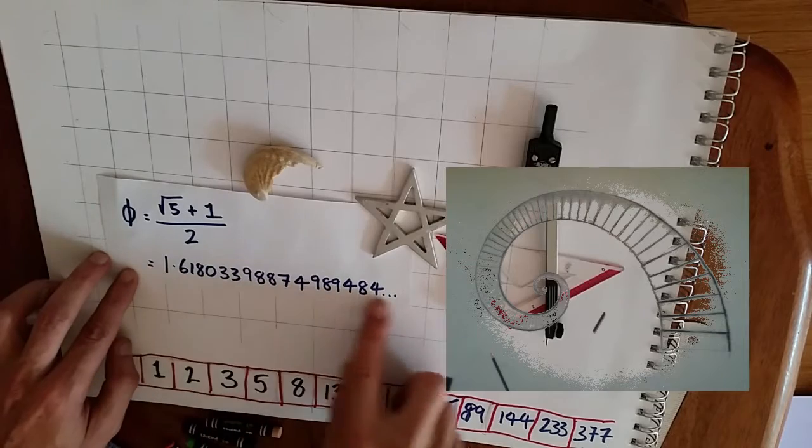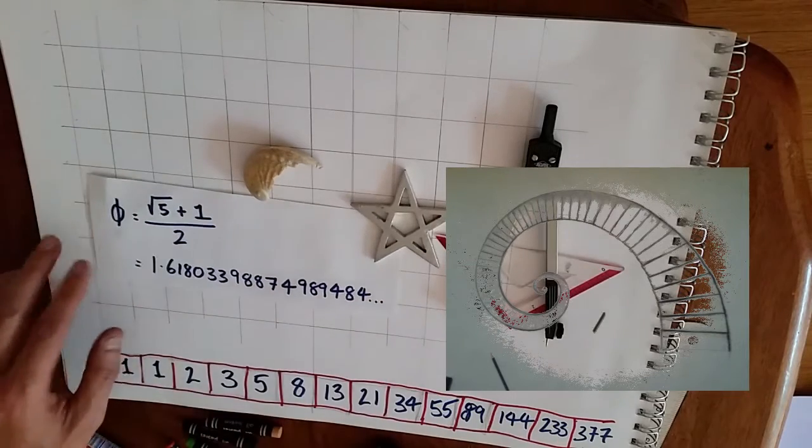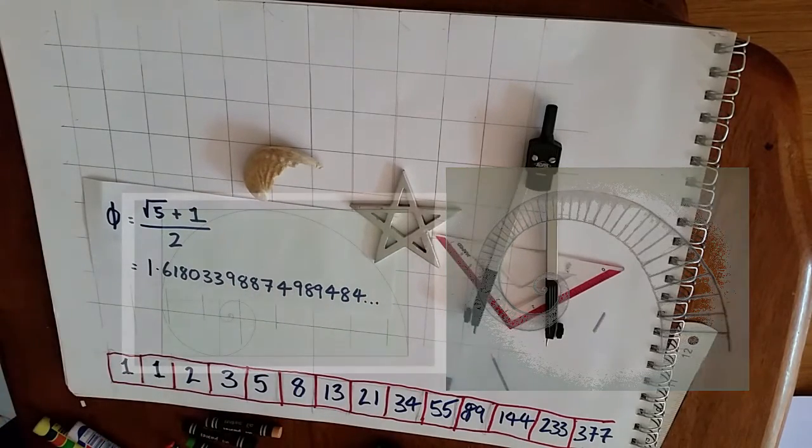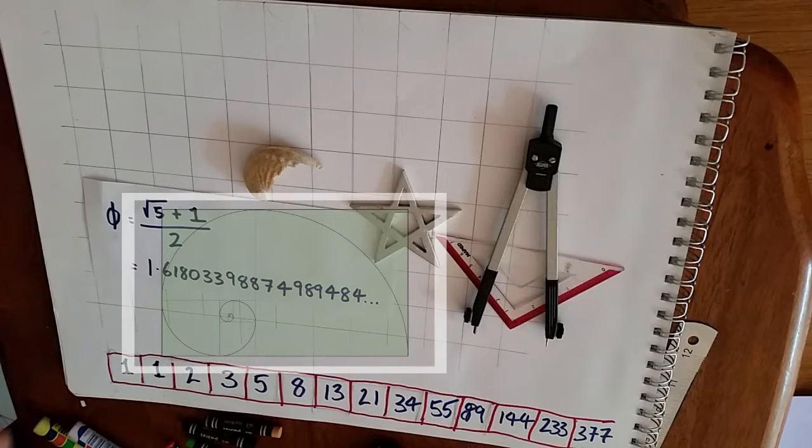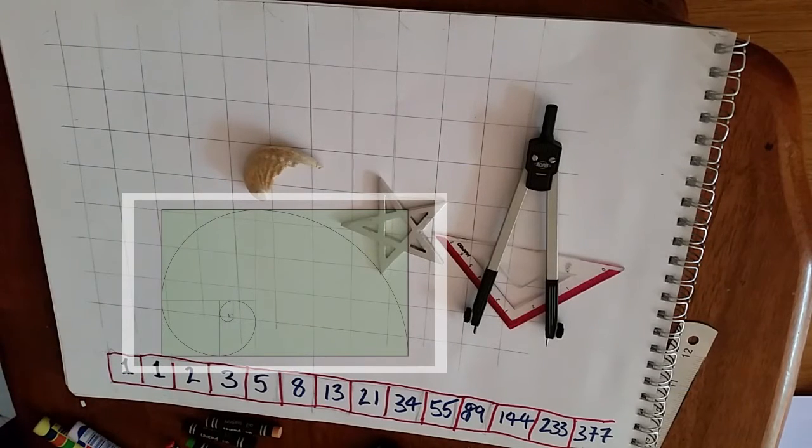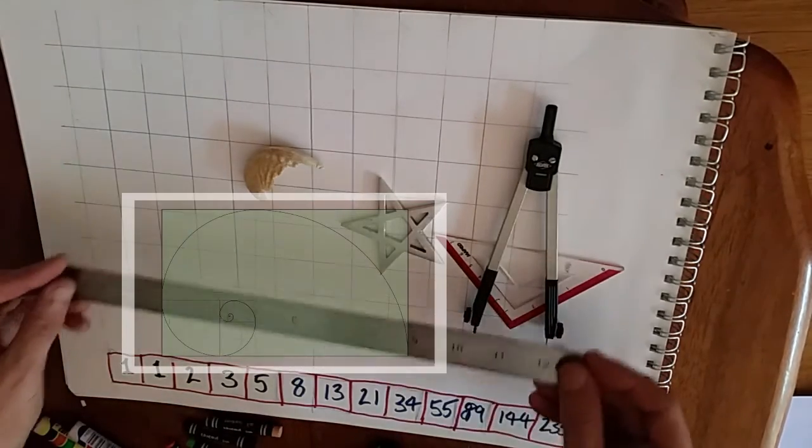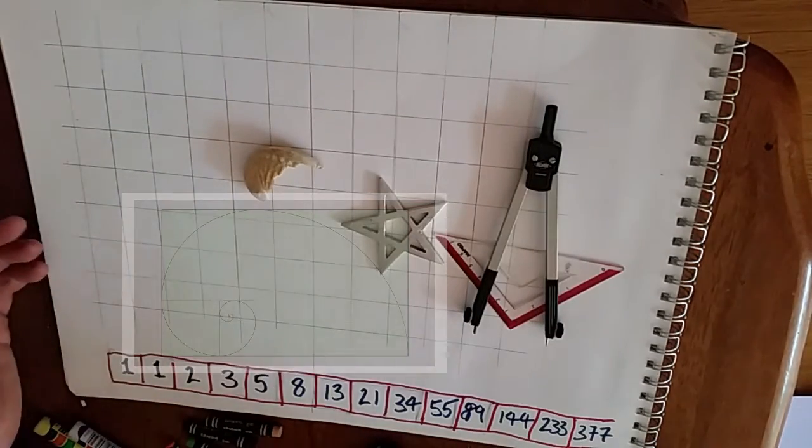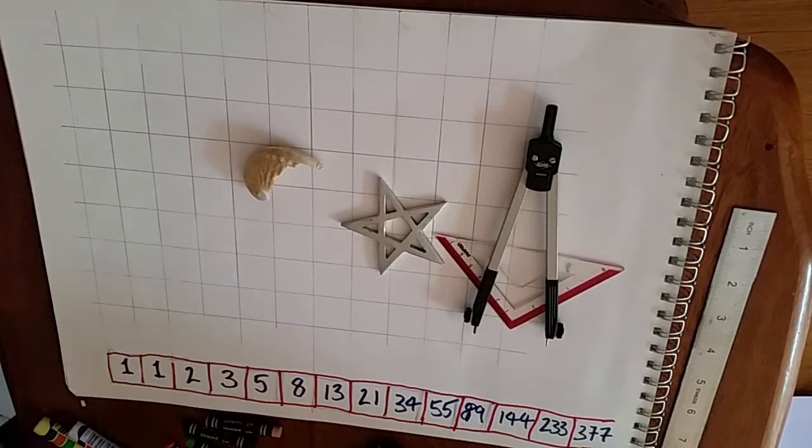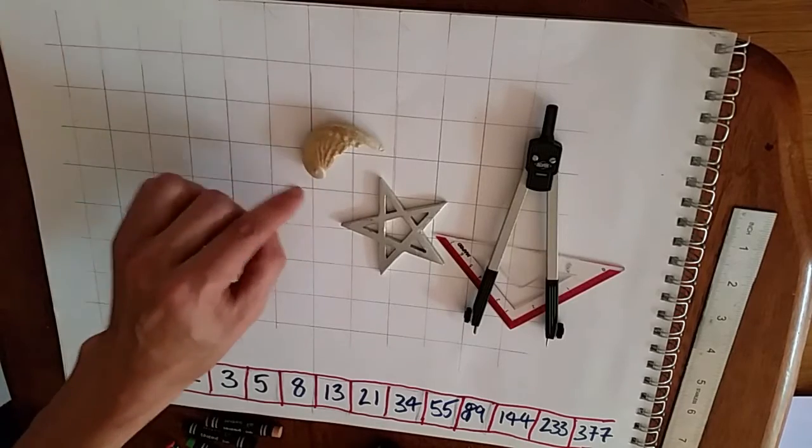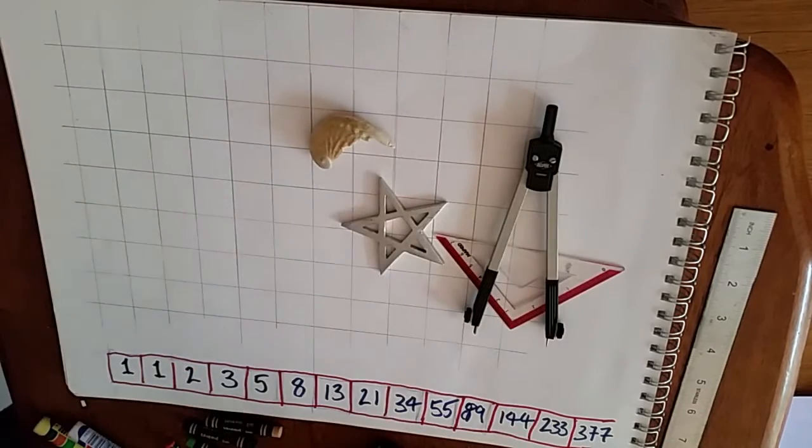Phi is 1.61803, it's this really special ratio number in nature and it's linked in many ways to the Vesica Pisces. Using a ruler I've already drawn a grid of squares to help visualize the scales. We're going to use this grid and begin with a Vesica.